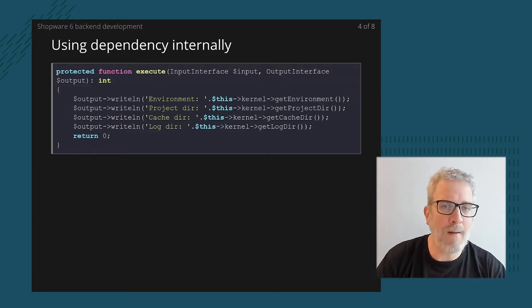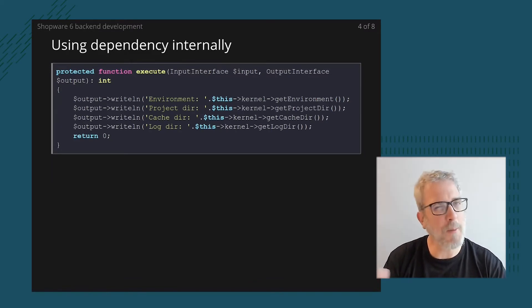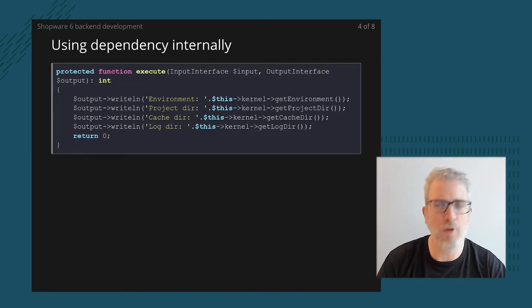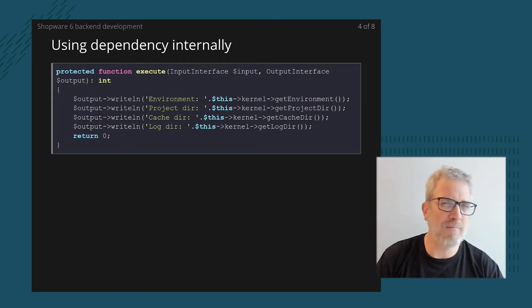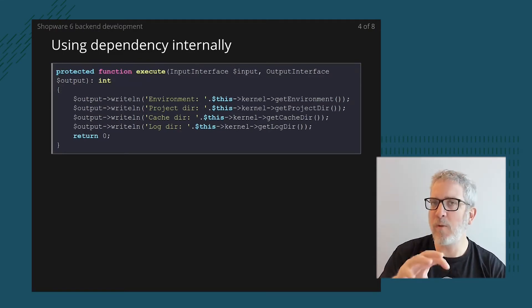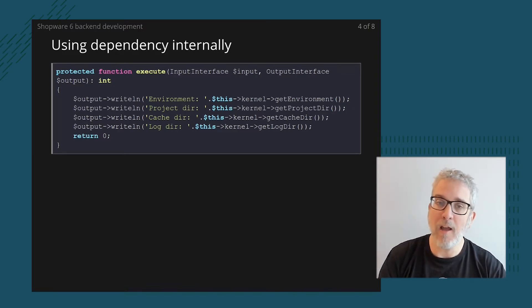Then we move to the execute method where we actually use the kernel variable. For instance, I'm able to output lines like the current environment, project directory, caching directory, and logging directory — a couple of useful things within the kernel we can play with. Note: the kernel also gives access to the DI container, but instead of using the DI container directly in our code, it's better to deal with services within the services.xml file.